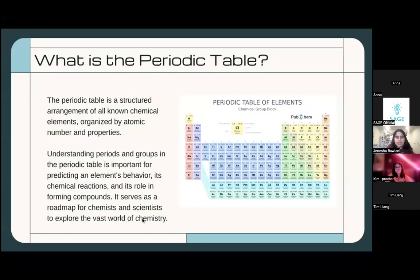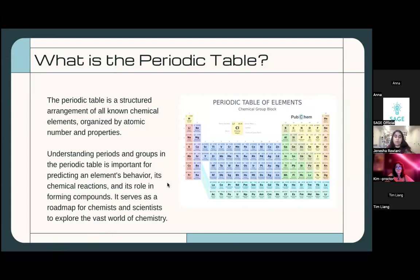The periodic table is a structured arrangement of all known chemical elements, organized by atomic number and properties. On the right we have an example of what the periodic table looks like. The periodic table is very important to chemistry because you have to understand the elements, the periods, and the periodic table to determine how chemicals interact and how they form compounds. It's basically like the building blocks of chemistry.